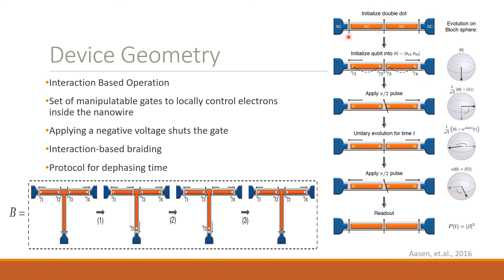We can review the functionality of topological qubits by following this protocol for the phasing time. When all three gates are closed, this double dot system is prepared in a determined charge state. By opening the gates on the end, we can initialize the qubit into the topological ground state, represented by this down arrow on the Bloch sphere. We then apply a pi-over-two pulse, which introduces a phase shift. We allow the system to unitarily evolve for some time t, and then apply another pi-over-two pulse to achieve the final state of the system, which is alpha|0⟩ plus beta|1⟩. By then shutting all three gates and reading out the system in a determined charge state, we can see the probability that the system decays from the initial zero state to the one state is |beta|².